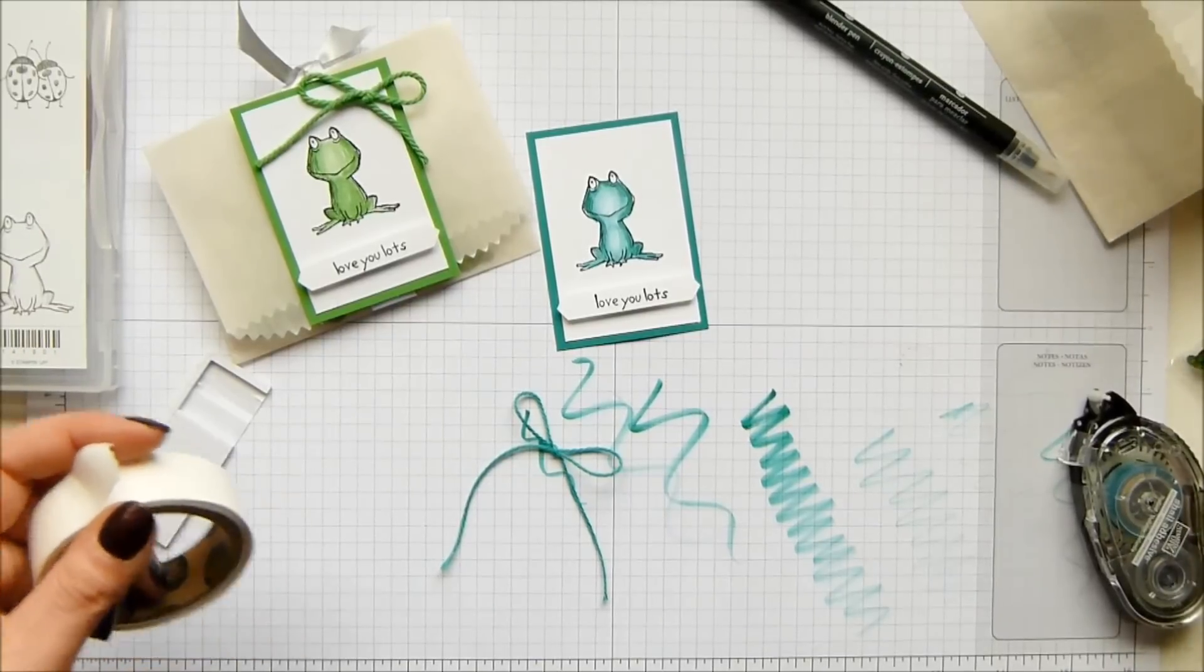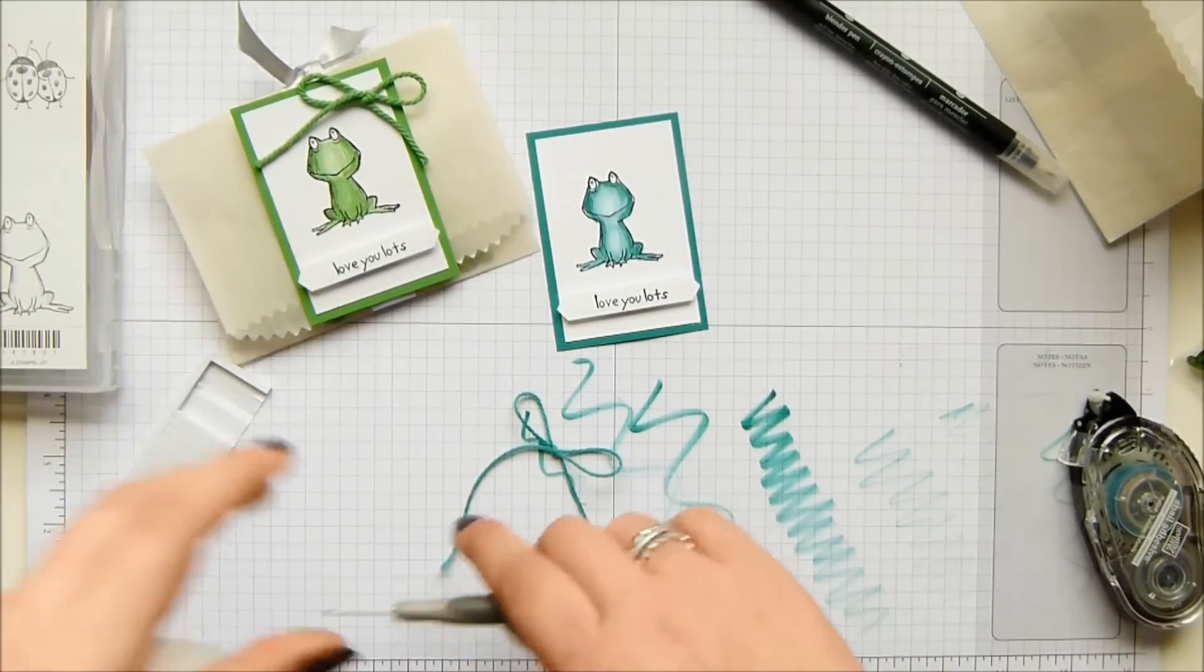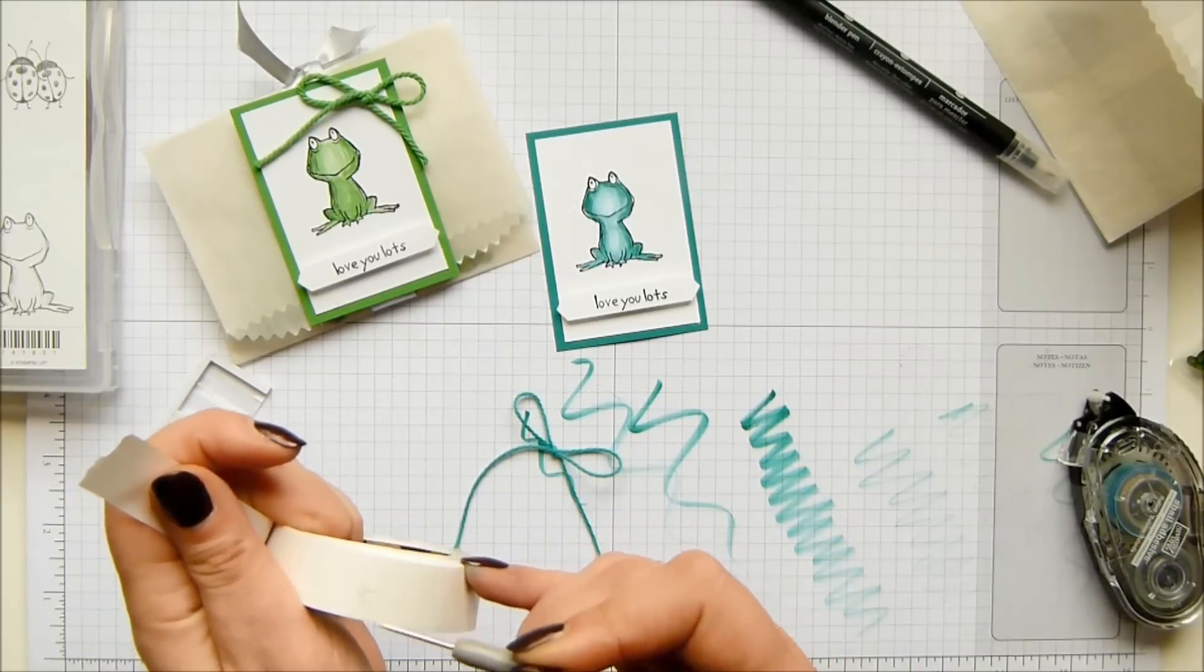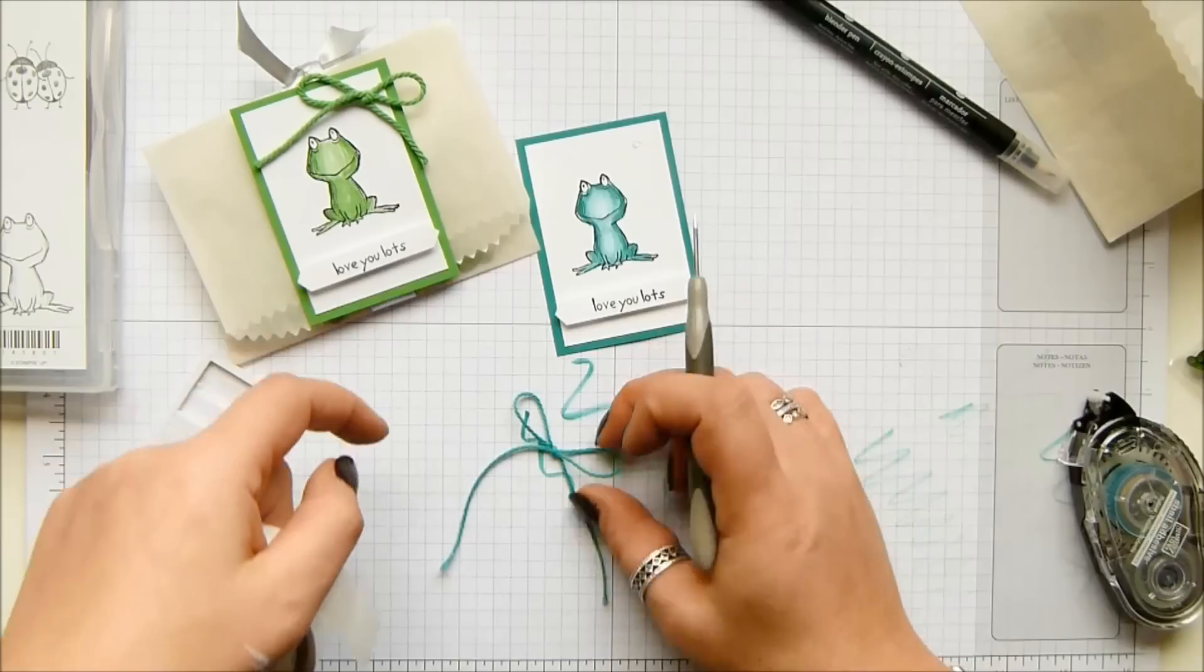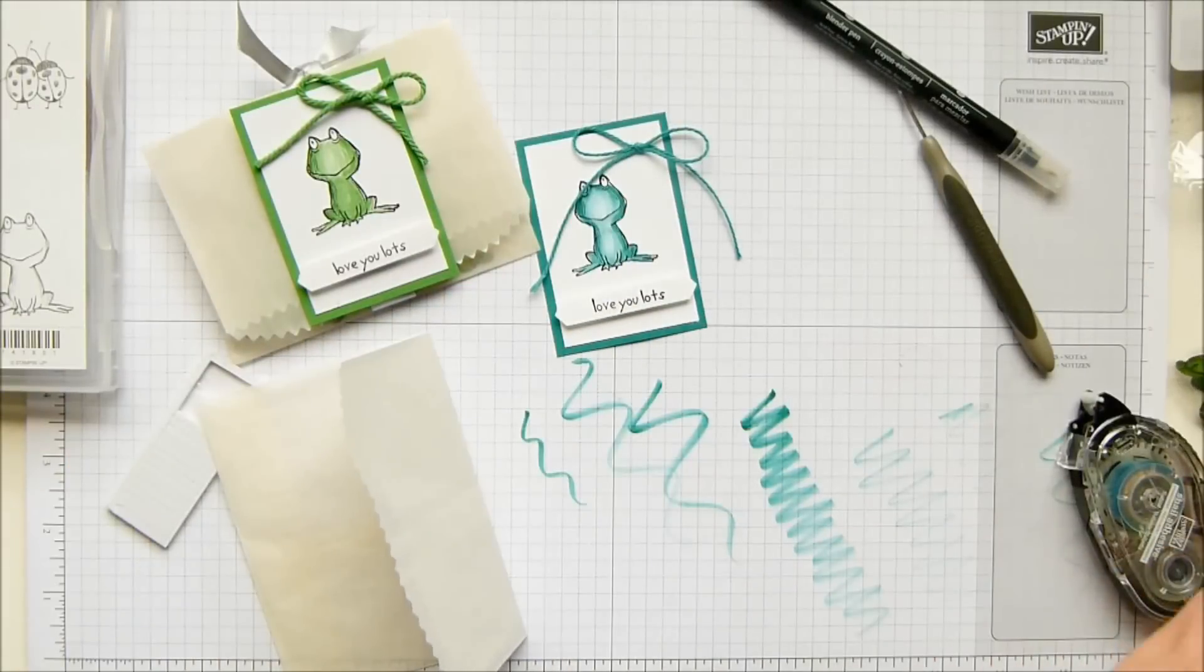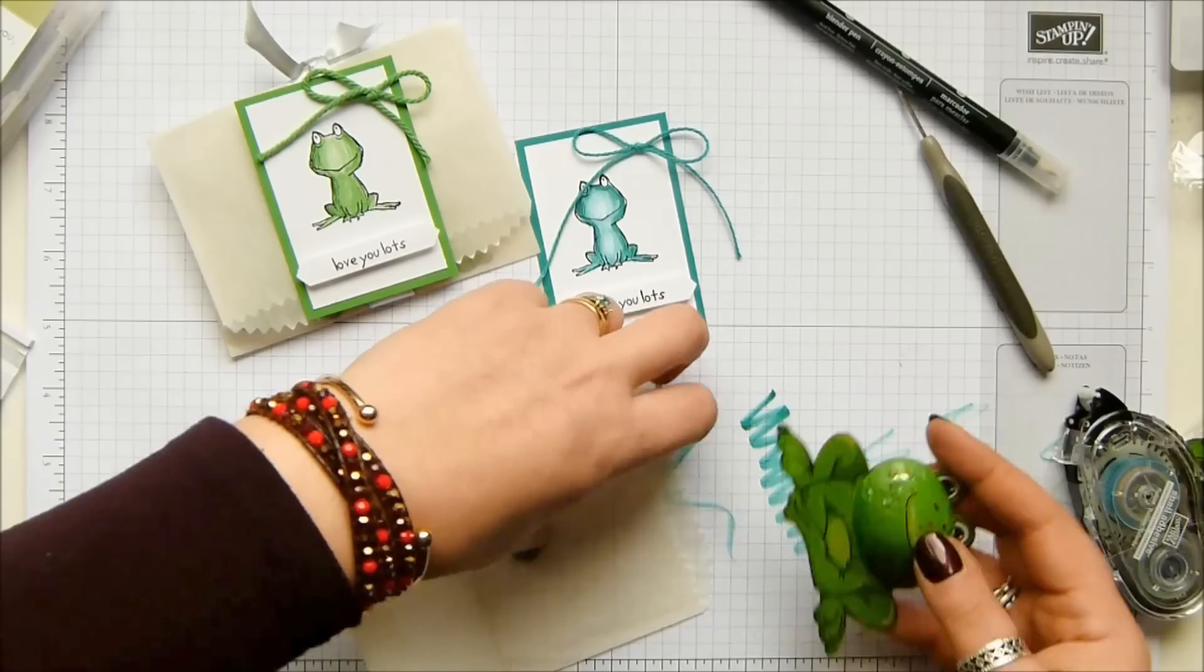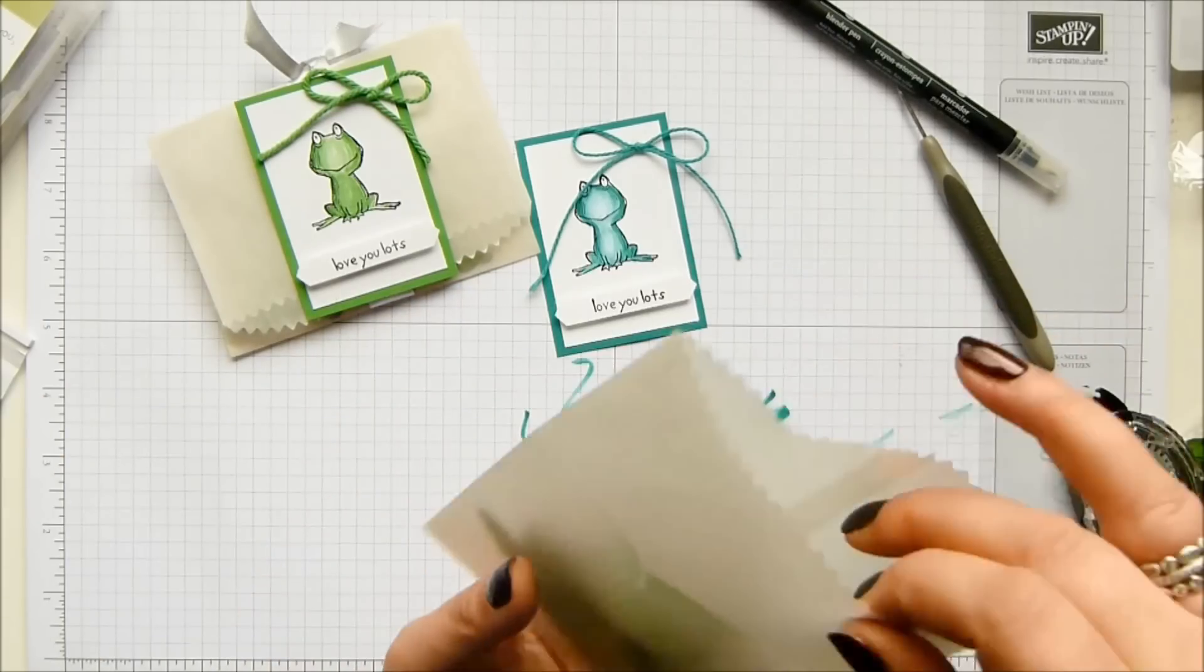Then with a mini glue dot on the back - oh, I'm creating a mess on my desk today, aren't I? I'm going to put that about there, and then put the knot over that glue dot and you can't see it. Grab my frog, and I'm going to grab some different ribbon. I don't have any more of that. I've run out of it. So there's my little chocolate frog. How cute is that?